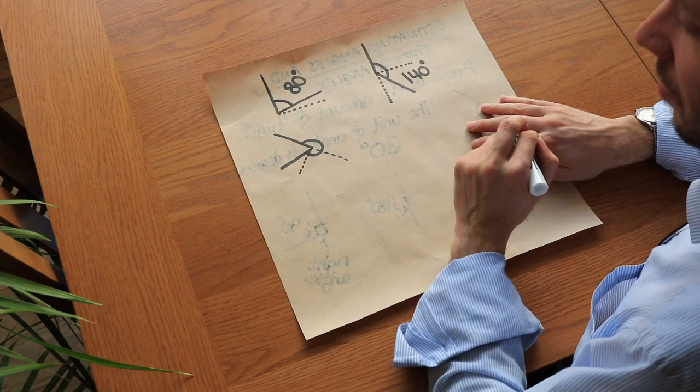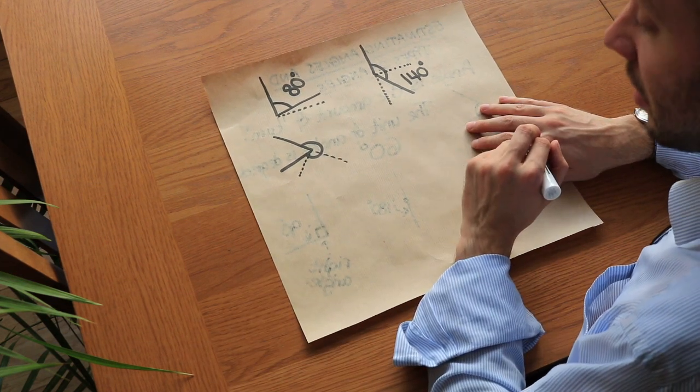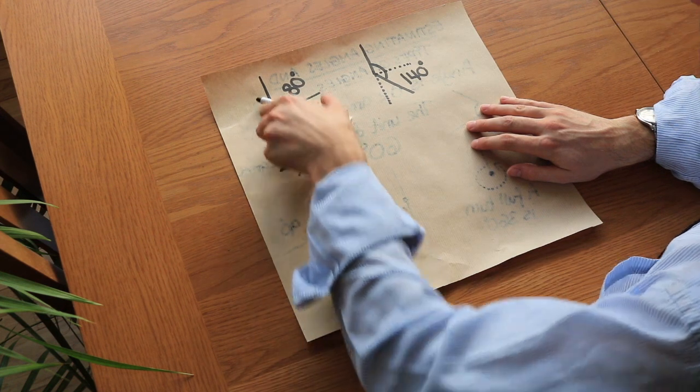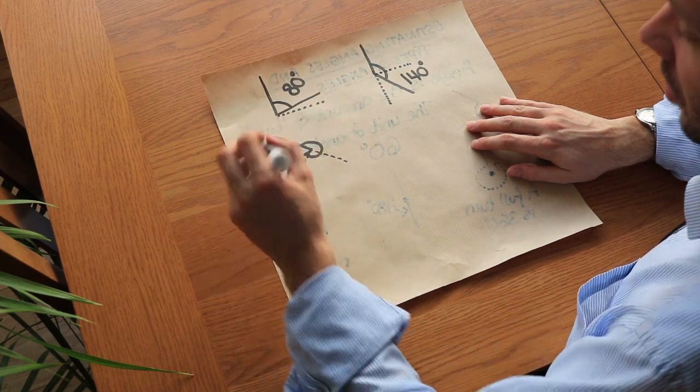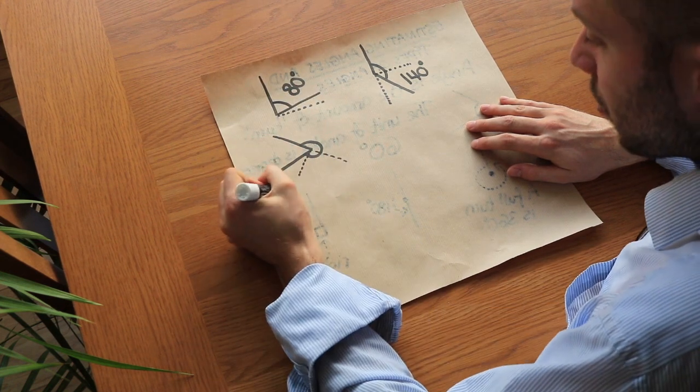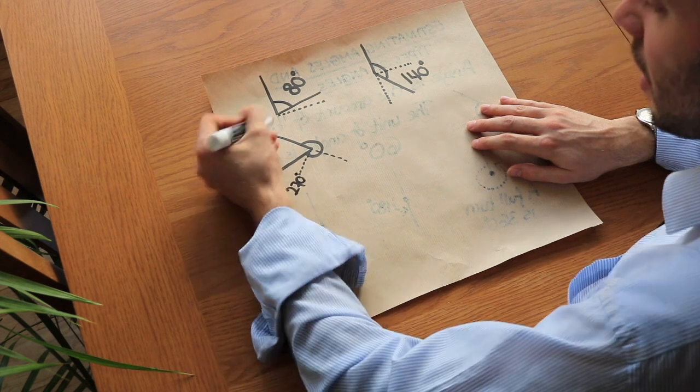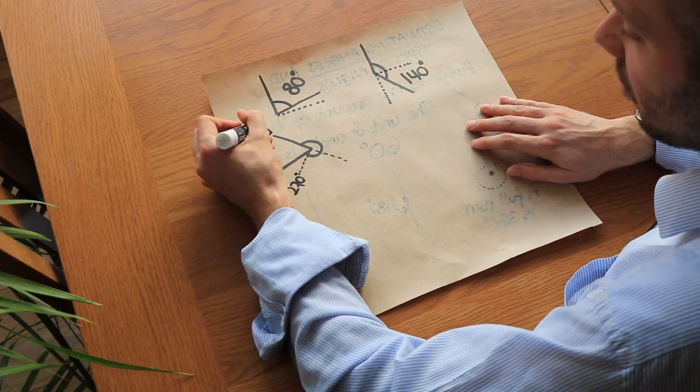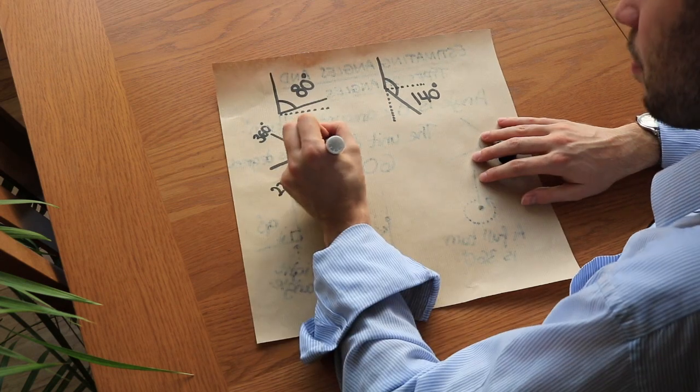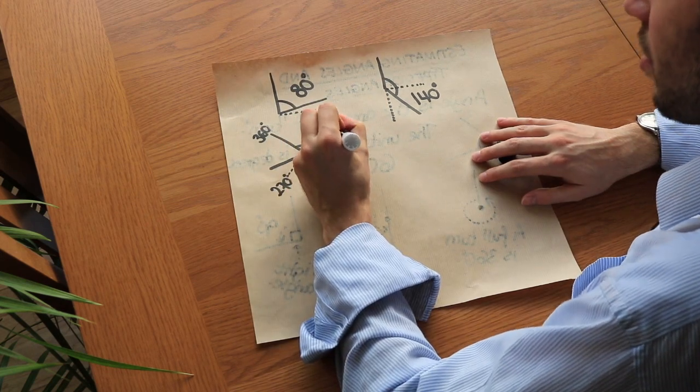But we also know that a full spin is 360 degrees, so this is somewhere between 270 degrees and 360 degrees. So I would estimate this angle is about 300 degrees.